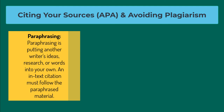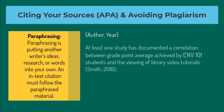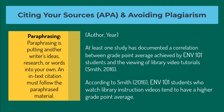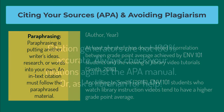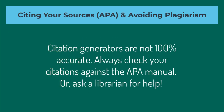In-text citations follow the author comma year format. Parenthetical citations can be used if you're not referencing the author or authors as part of a sentence. If you're referring to the author or authors as part of the sentence, you'll use the same format except only the year will be contained within parentheses. The database citation generators I've shown you are really helpful, but there's often one or two mistakes, so we'll briefly go over the format for citing books and journal articles in your reference list.